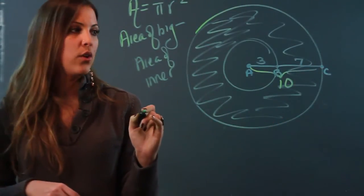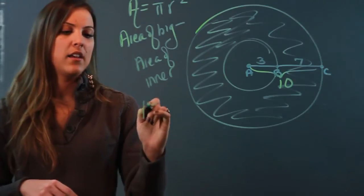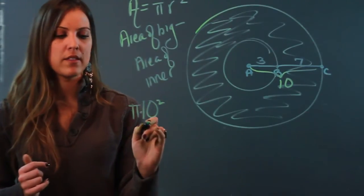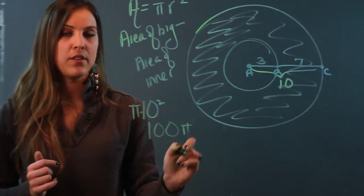So, the area of my big circle is pi times 10 squared, and I'm going to simplify that to 100 pi. We'll leave it in terms of pi.